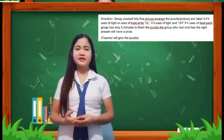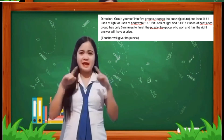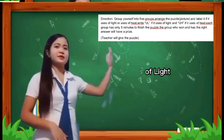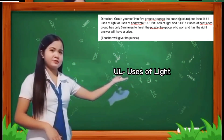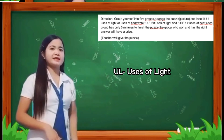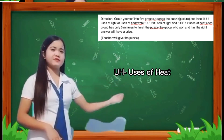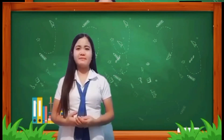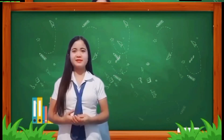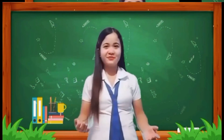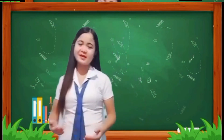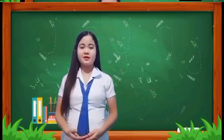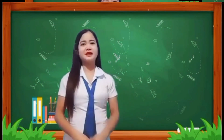If your group has already finished arranging the puzzle, there is a line below the picture. All you need to do is to write letter UL if it is uses of light, or write letter UH if it is uses of heat. Each group has only five minutes to finish the given task. The group who finishes first and has the right answer will have a prize. Is that clear? Okay, ready, start!